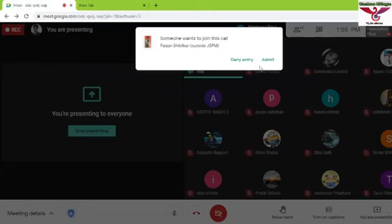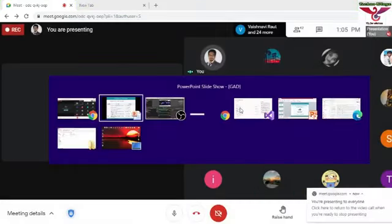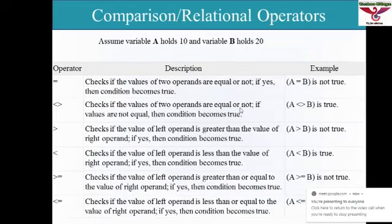Those are the arithmetic operators. After that there are comparison operators: equal to, not equal to, greater than, less than, greater than or equal to, and less than or equal to. The comparison operator gives a value in the form of true or false.